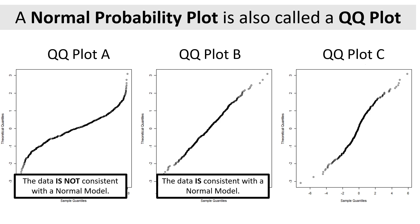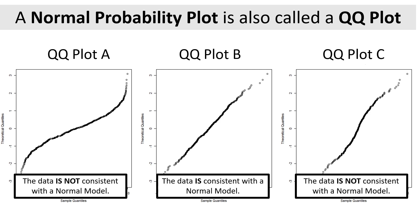If you are faced with a borderline case like plot C, pick one and give a good answer — explain why you think so. If your explanation is correct, I will mark you correct. Myself, I would say this data is not consistent with a normal model because it does have a bit of a curve in the way the data points are lined up. But somebody else might say the points are roughly in a straight line, so it's fairly consistent.